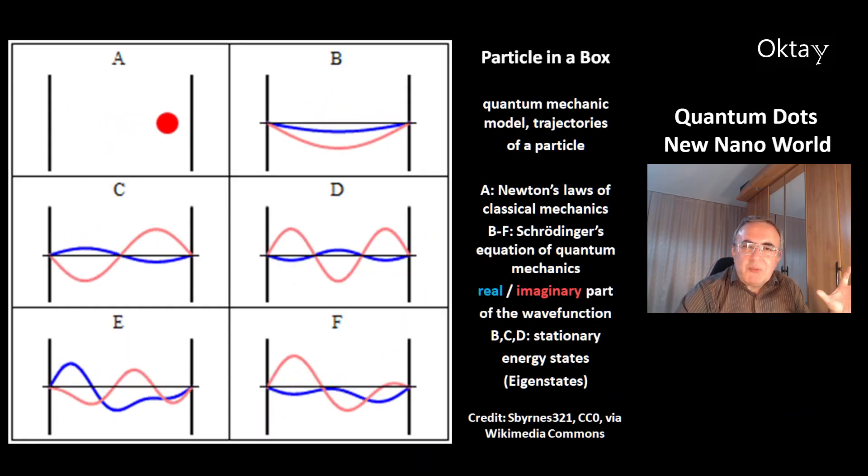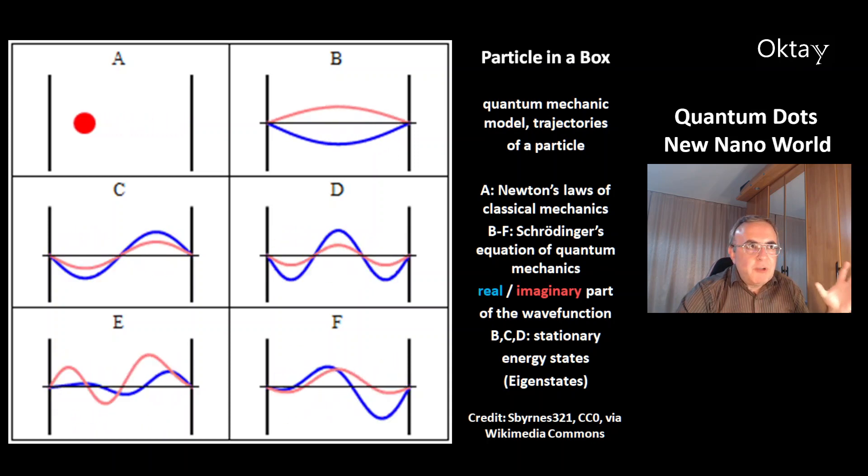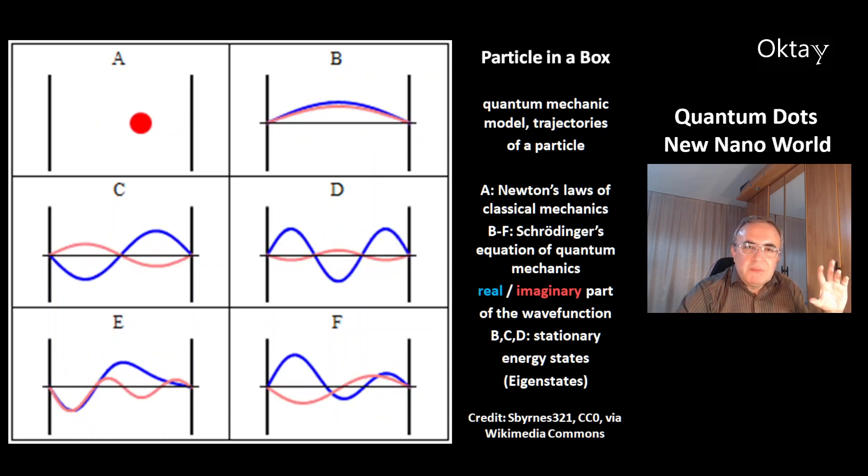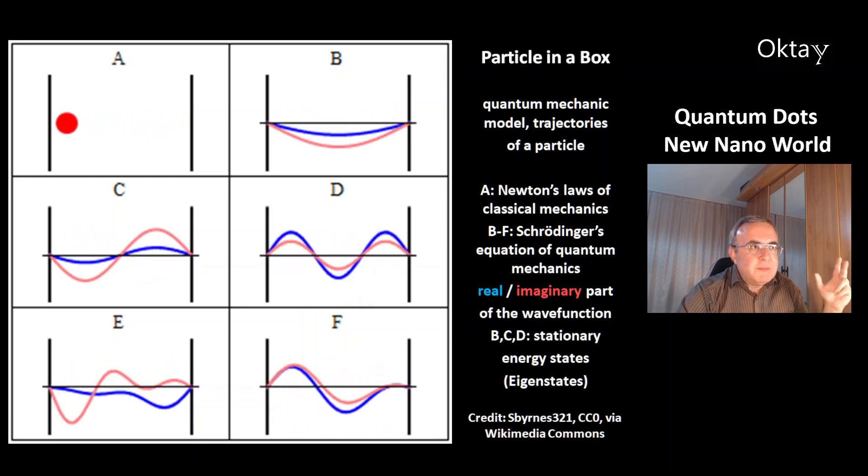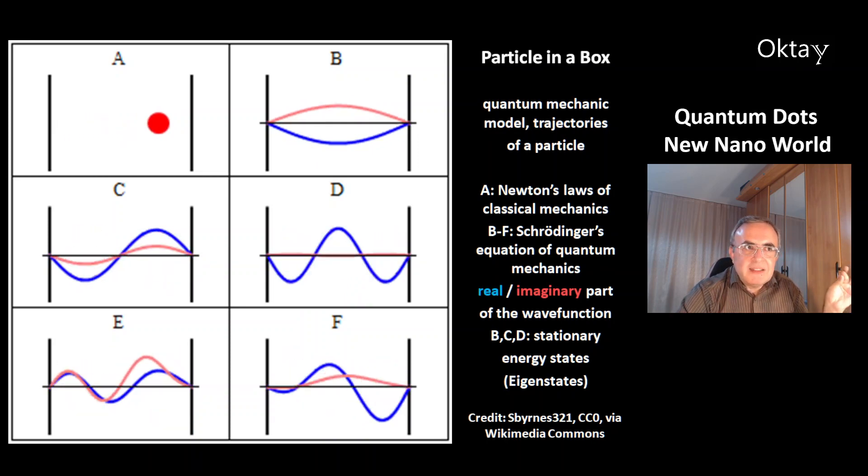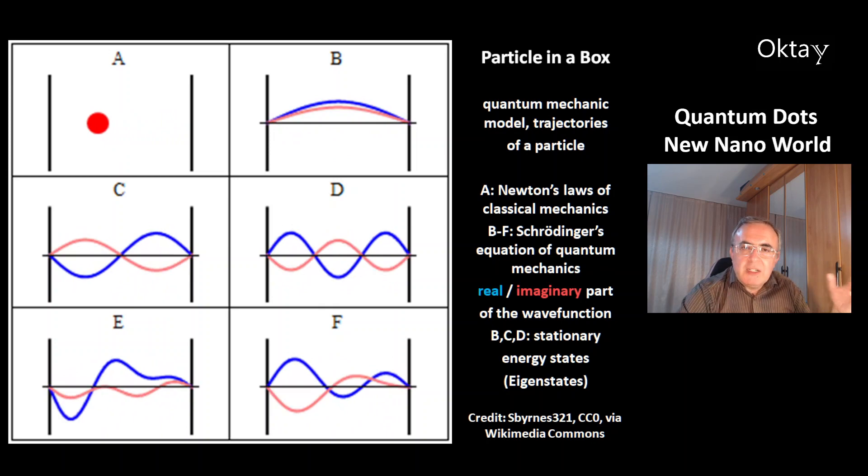This is the standard model in quantum mechanics. That's the particle in a box. It describes the trajectories of a particle, A, top left. That's Newton's laws of classical mechanics.